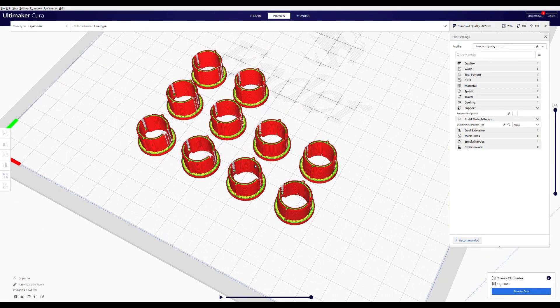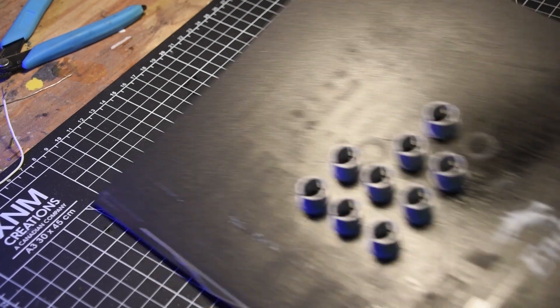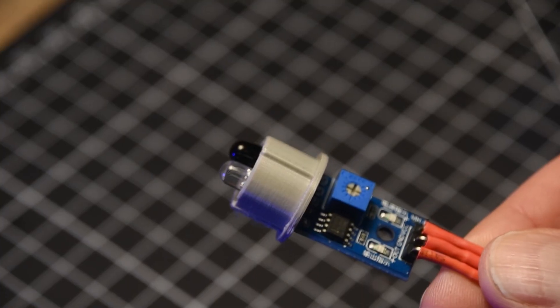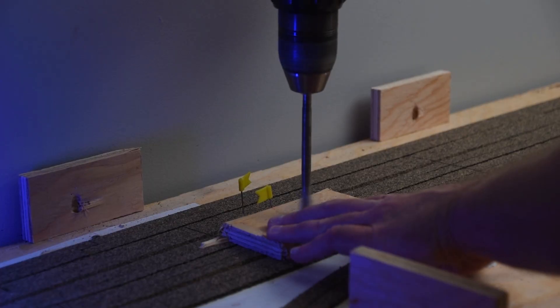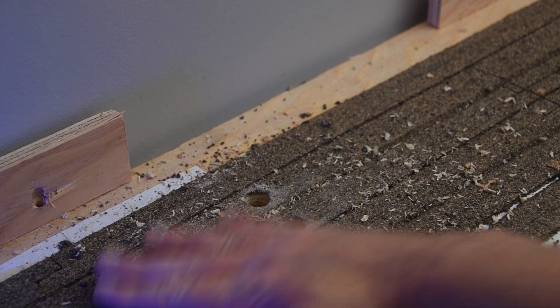I wanted an easy way to mount the detectors beneath the layout, so I designed and 3D printed small collars that allowed the sensor to fit snugly within a plastic sheath inserted into a 5/8 inch hole beneath the track.